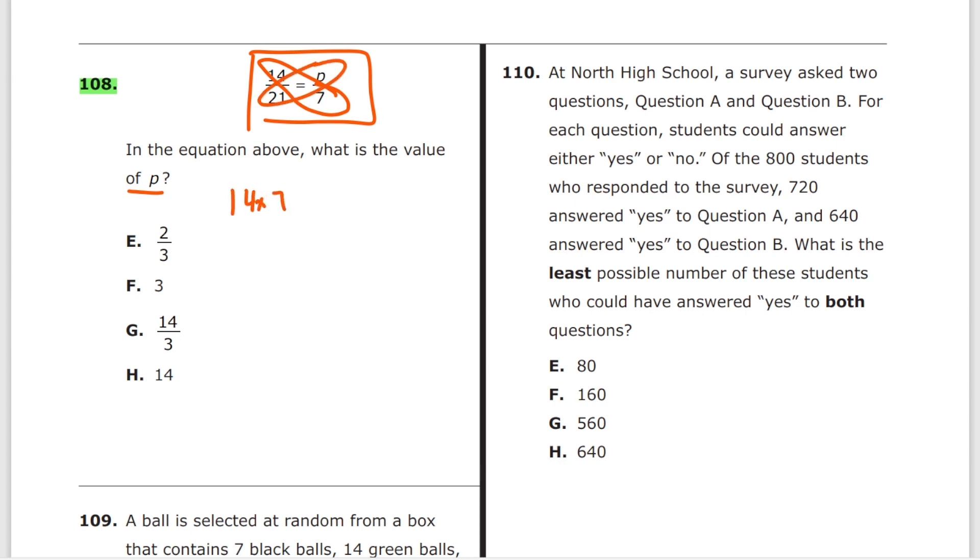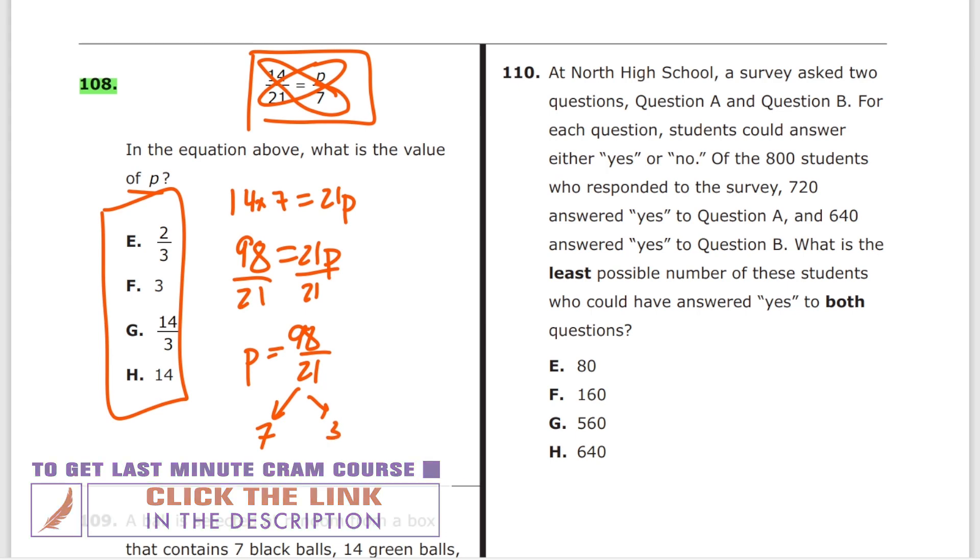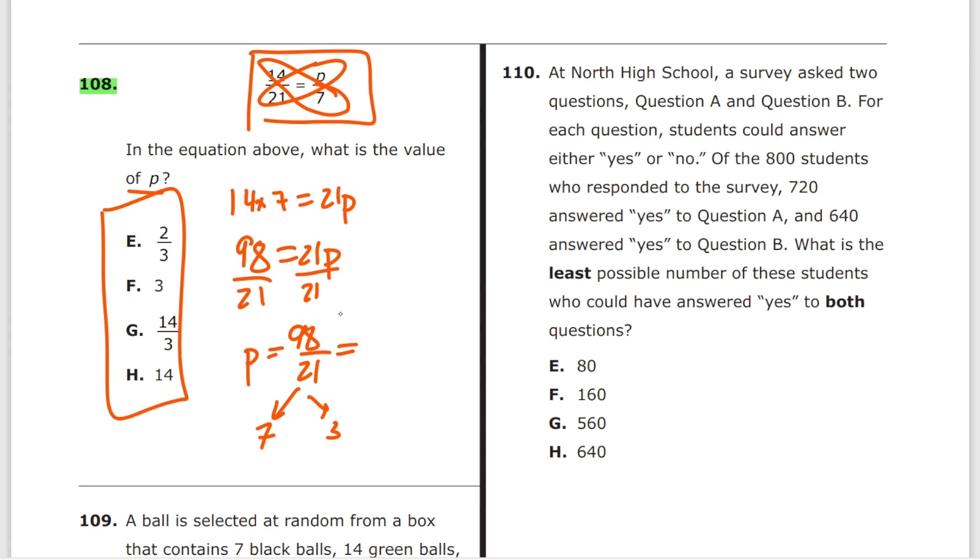So you get 14 times 7 is equal to 21p. What is 14 times 7, right? Like you will start thinking about this, and then you'll get to 98, so now it's 98 is equal to 21p. Now let's divide both sides by 21, so you get p equals 98 over 21. It's not any of these answers, so now you have to start simplifying. By what? You know that 21 is 7 and 3, so you'll start dividing 98 by 3, doesn't go, so then you divide 98 by 7, so that's equal to what, 14 over 3, and you get to G, right? So that's how most of you will do this.